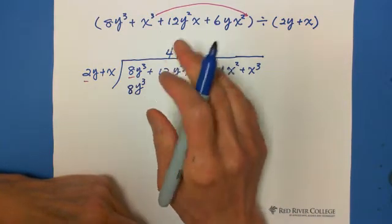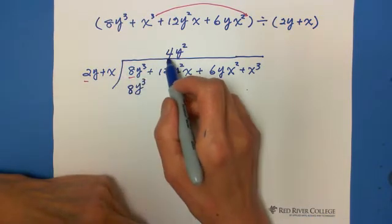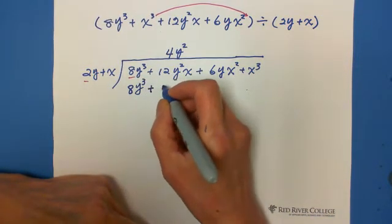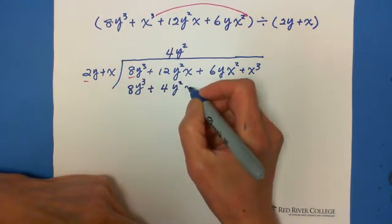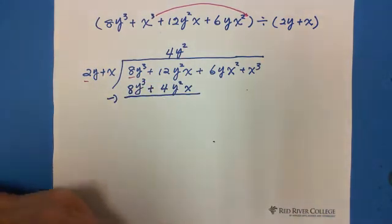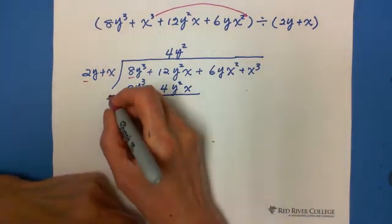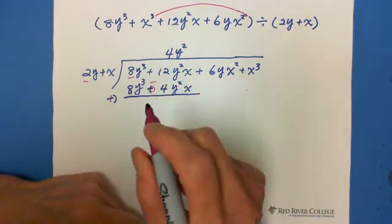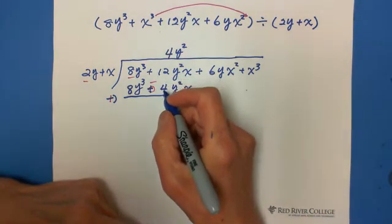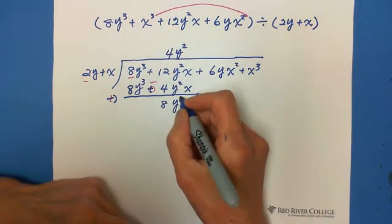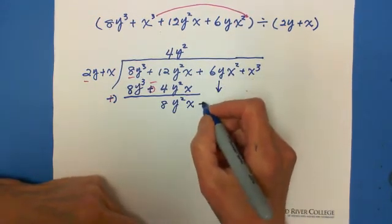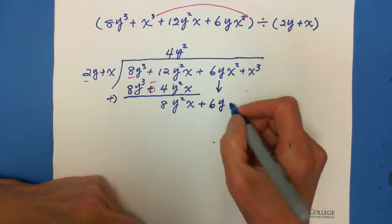And then, no choice. You just follow. So x times 4y squared equals positive 4y squared x, and subtract. And then also change subtraction to add its opposite. So now we have 12 minus 4 equals 8y squared x. Carry it on.